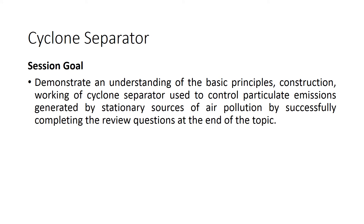In the last session, we have discussed selection criteria for choosing air pollution control equipment. Different mechanisms involved in air pollution control equipment were discussed. Construction and working of Gravity Settling Chamber, a primary dust collector, was discussed in detail with its advantages, limitations and applications.